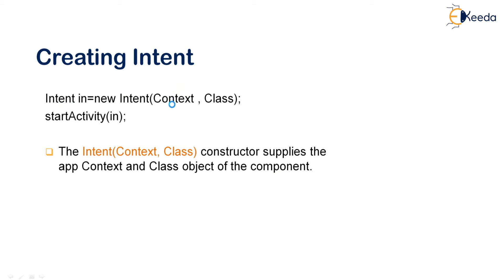The intent constructor contains two parameters: one is the context — nothing but the 'this' keyword — which is the current activity's context. The second parameter is the class, which is the target class you are going to supply. When you want to start a new activity, we call startActivity() and pass the intent object. If that activity is returning a result, we call startActivityForResult().